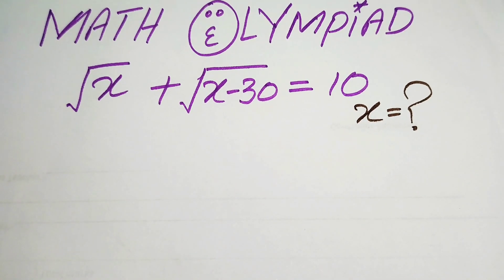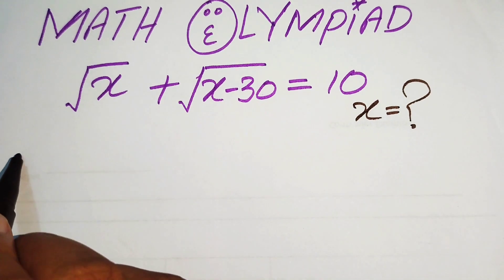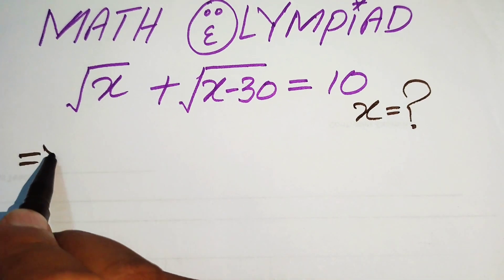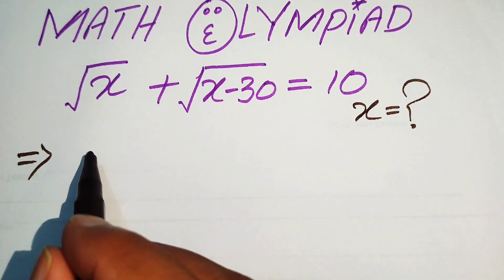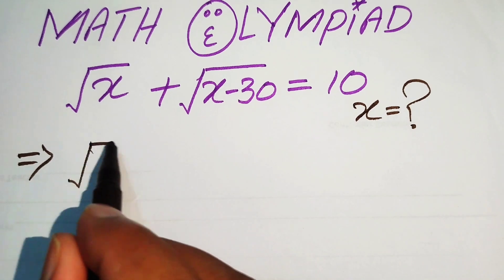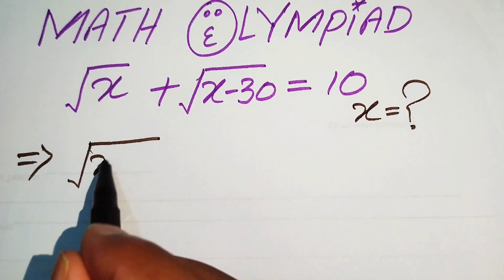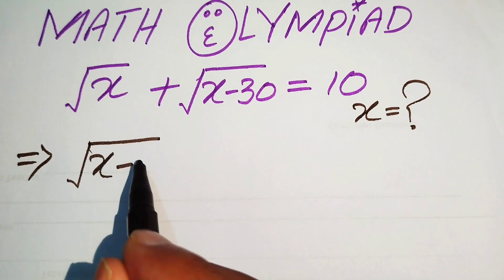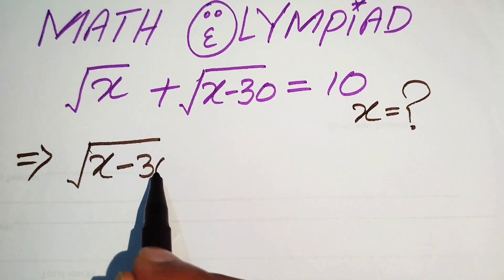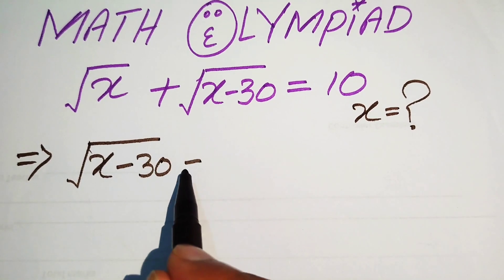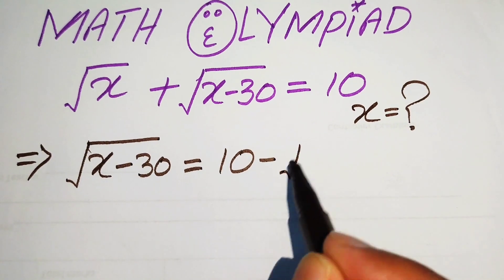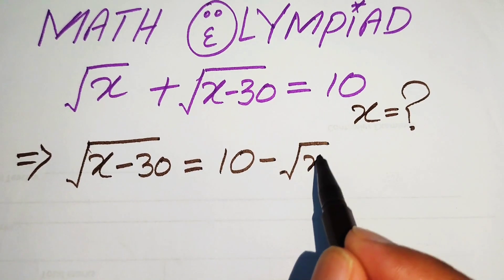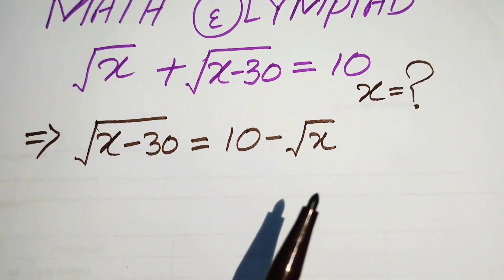In order to eliminate these radical signs, we move the square root of x to the right hand side, and the equation is rewritten as: square root of (x minus 30) equals 10 minus square root of x.